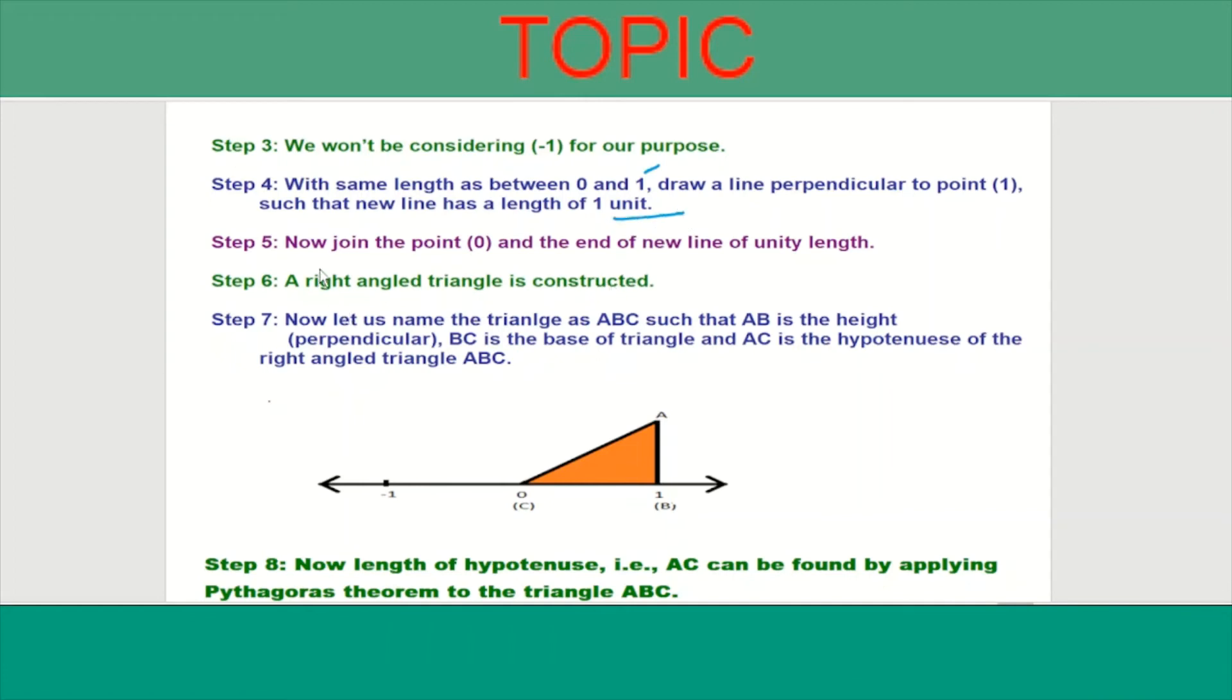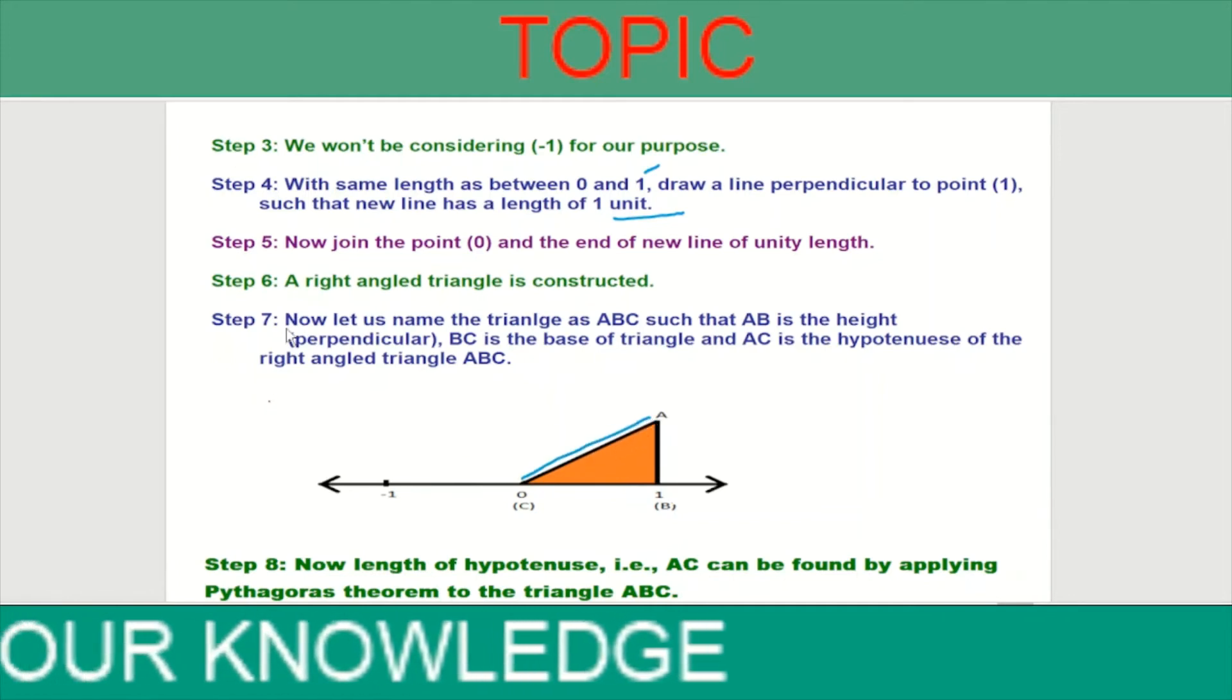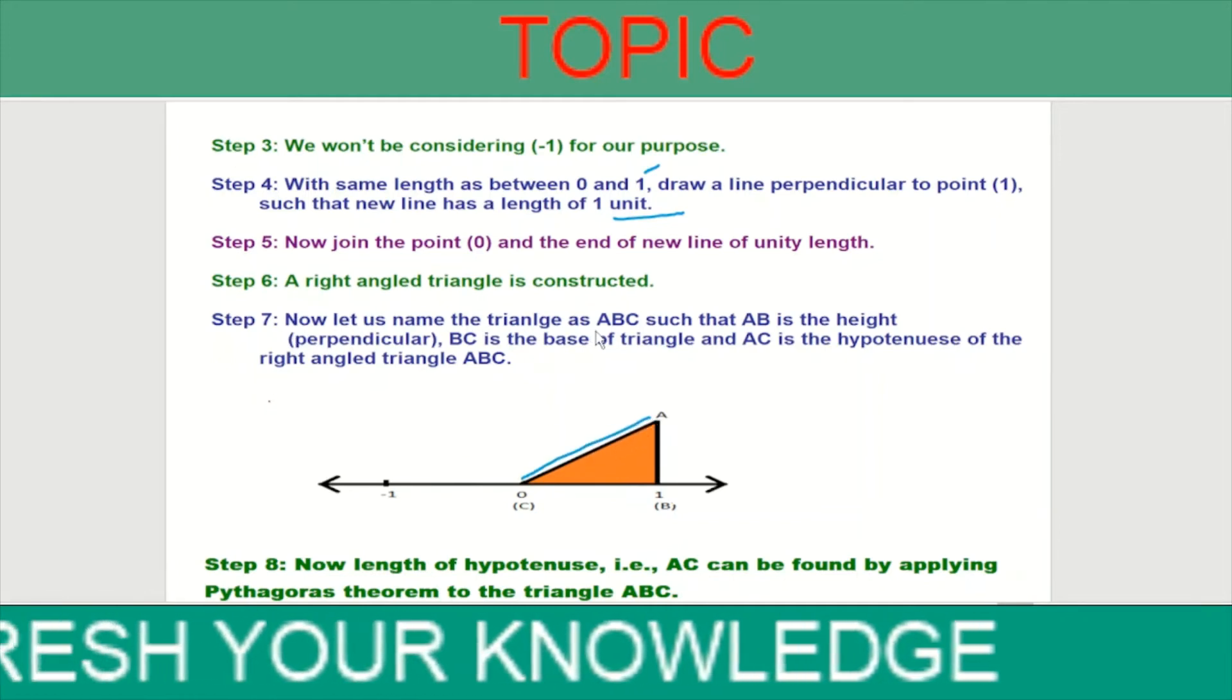Step 5: Now, join the point O and the end of the new line of unit length. Let us name the triangle as ABC.